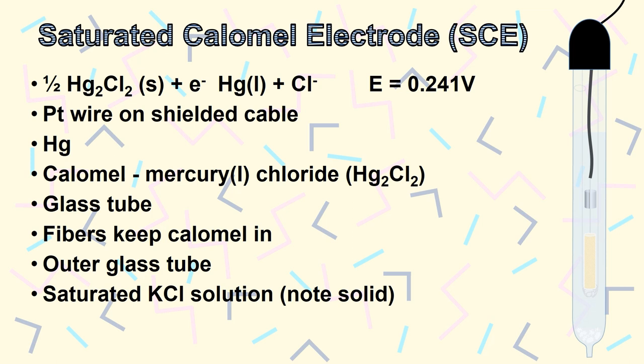A small amount of saturated solution leaks out through a ceramic frit at the bottom. This is how conductivity with the solution is established, while keeping the solid KCl inside the electrode. Note that the vent must be open to allow air into the electrode for that small amount of solution to leak out the bottom.